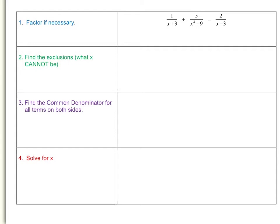Let's look at our example: 1 over (x plus 3) plus 5 over (x squared minus 9) equals 2 over (x minus 3). The first thing we want to do is factor these denominators if necessary. I see x squared minus 9 could be factored to (x plus 3) times (x minus 3).